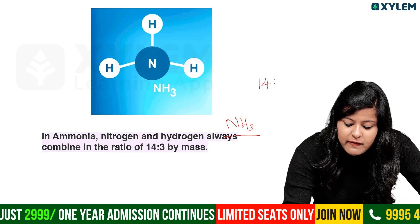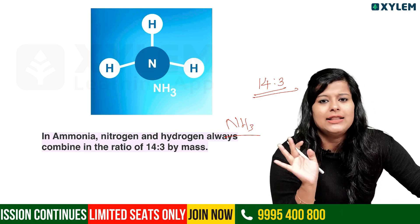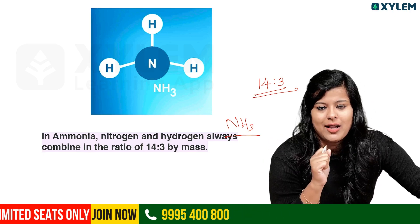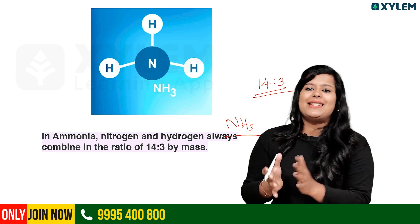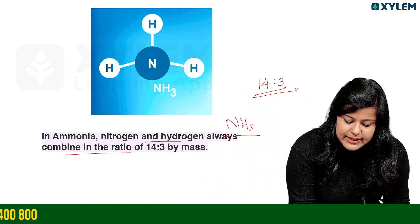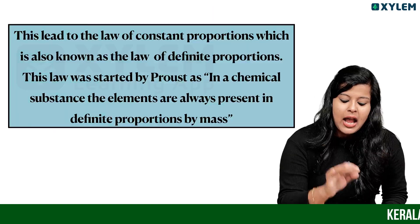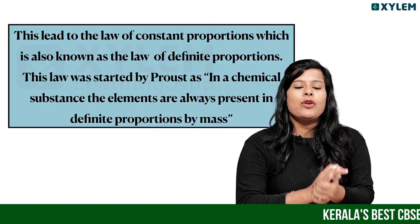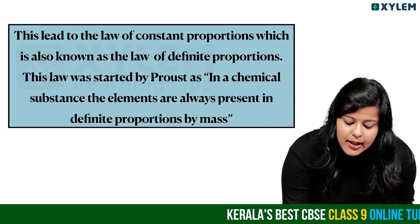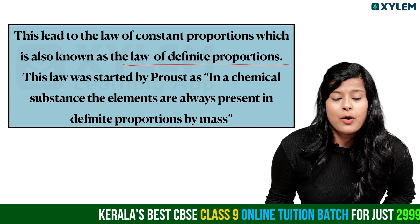The mass proportion for ammonia is 14 to 3 — nitrogen to hydrogen. Nitrogen and hydrogen always combine in the ratio 14 to 3 by mass. This leads to the Law of Constant Proportion, also known as the Law of Definite Proportion.